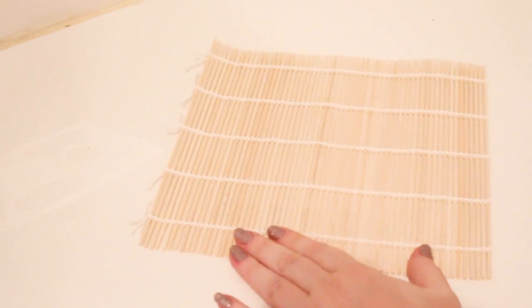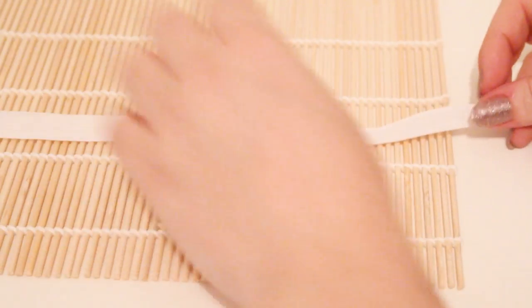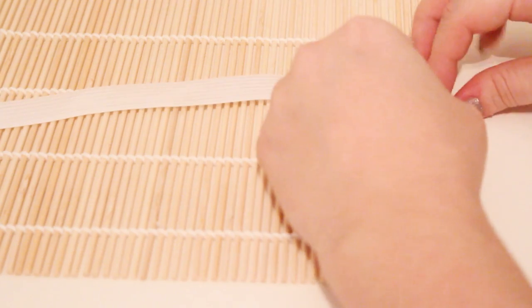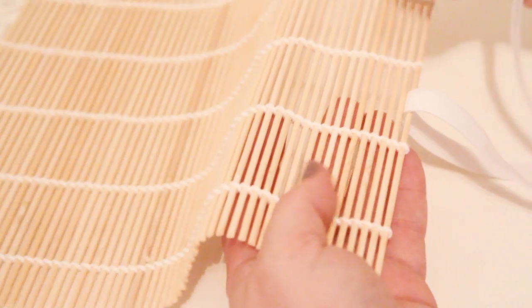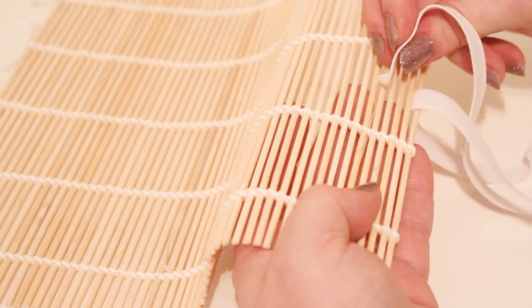So what you can do with this sushi mat is using some elastic, you just slide it through on the end piece, then you're going to weave it through all the way along making gaps for your brushes to be held into. You only need to do one row although you could do two if you wanted it to be really secure, but I found that just one row worked really well.